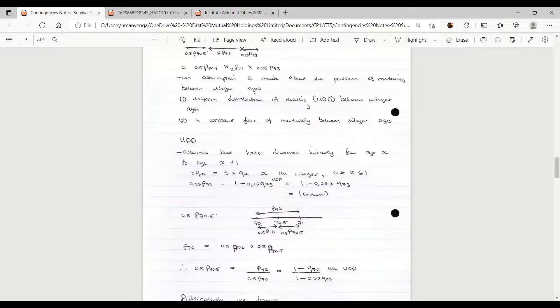For the uniform distribution of deaths between integer ages, we just simplify it as UDD. It assumes that lx+t decreases linearly from lx to lx+1. When you are given a death probability tqx, where t is between 0 and 1, it will evaluate to t times qx, where x is the age of the individual and it is an integer.